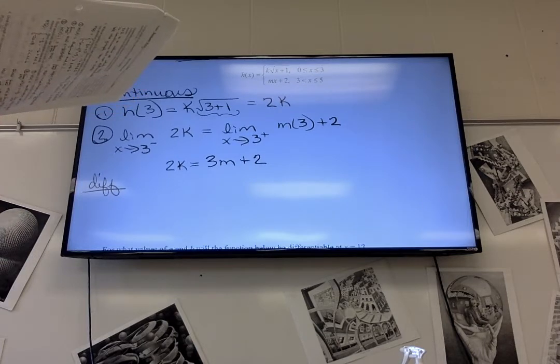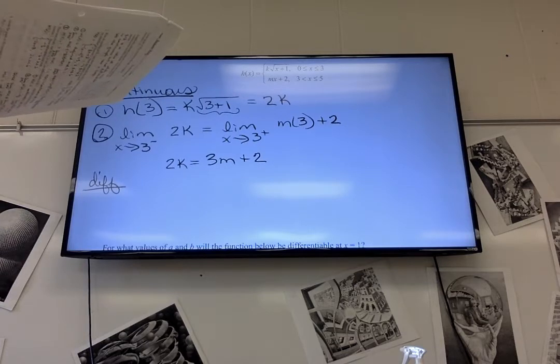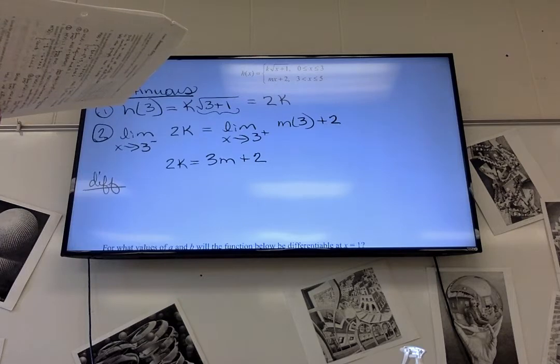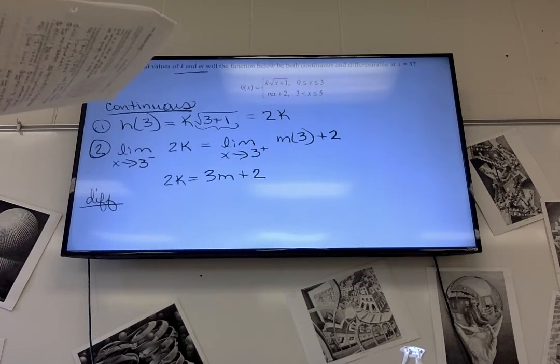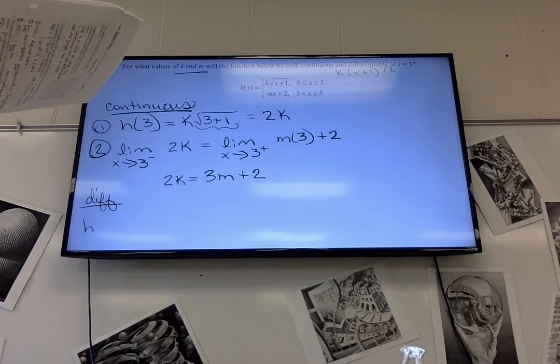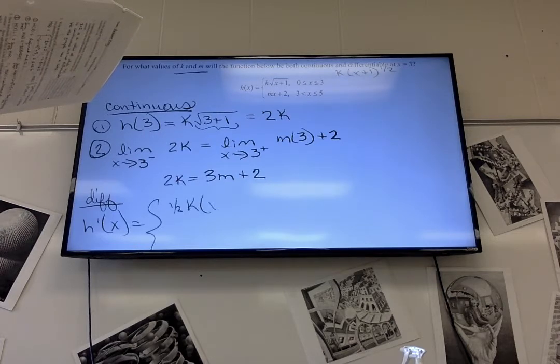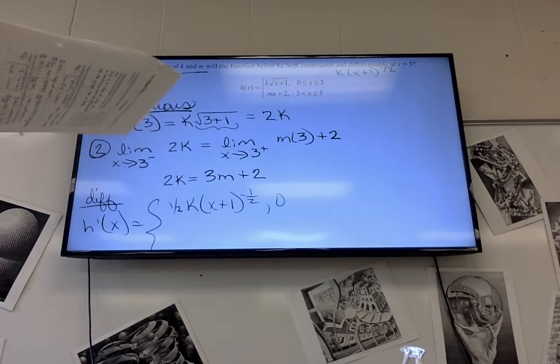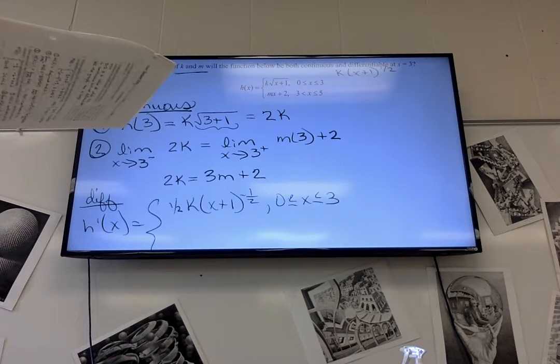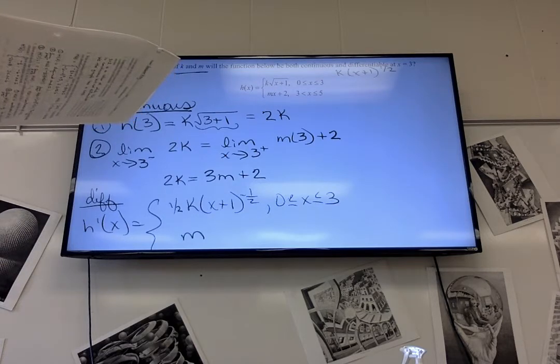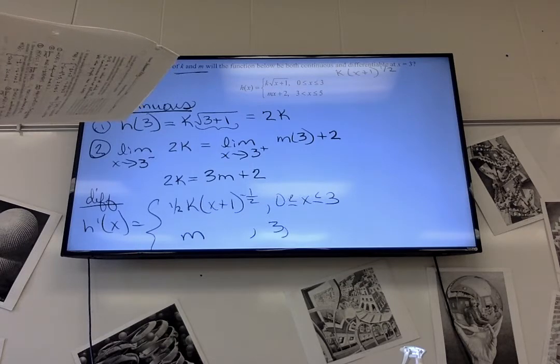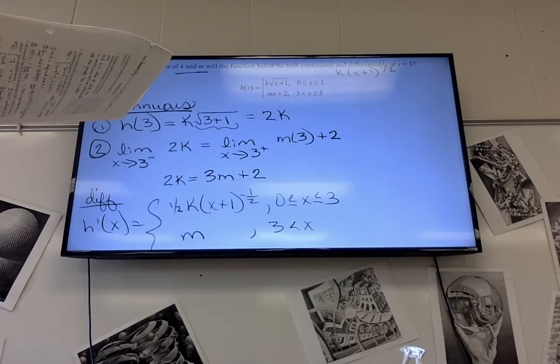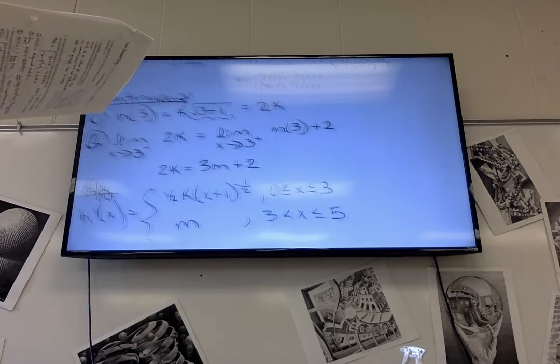To do differentiability, we've got to find a derivative of each one of those, and know that k is a constant. You don't have to do the product rule. So that is k times x plus 1 to the 1 half. Yeah, 1 half k times x plus 1 to the negative 1 half. Do you have to do this? Well, you can, but it isn't going to take it. It's acting in each one. Yes. It wasn't 1. It is 1. M. And the next one would be m.